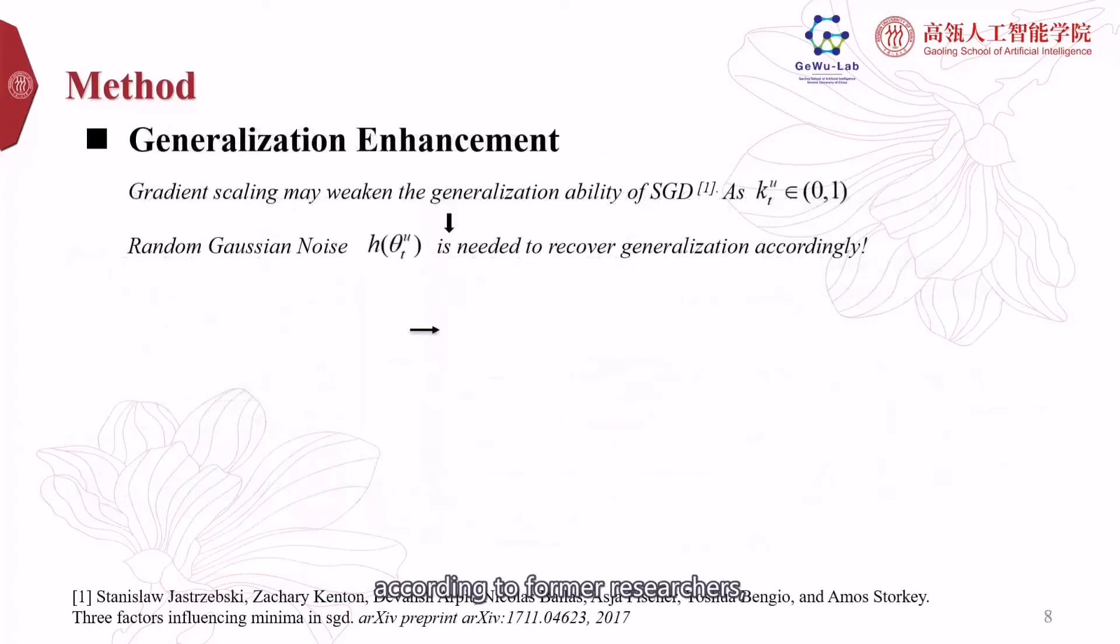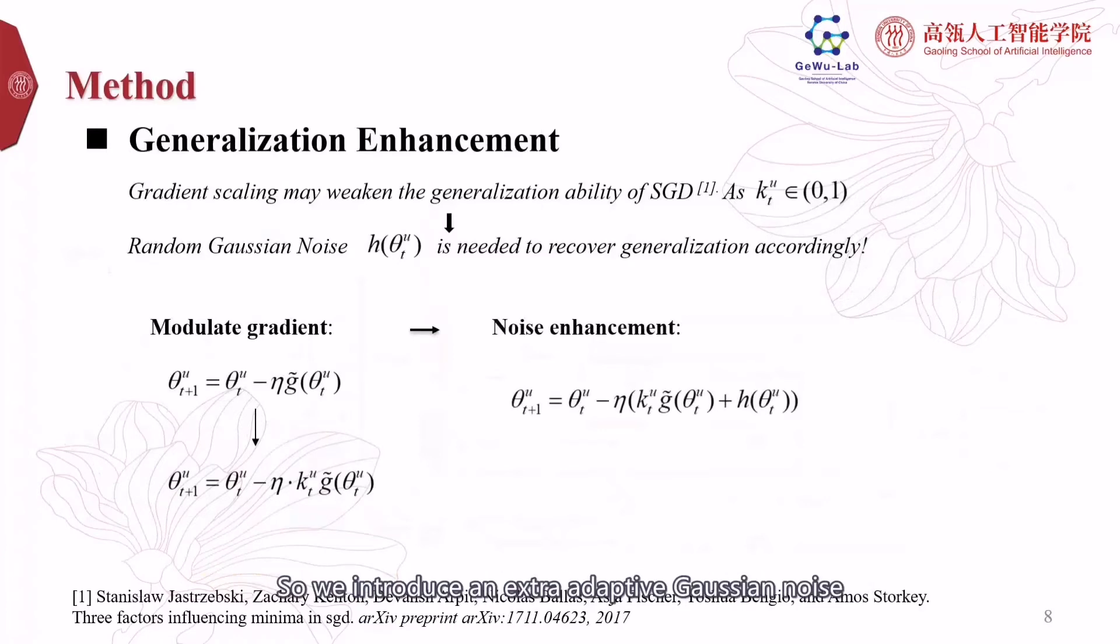However, according to former researchers, better generalization ability is closely related to bigger SGD gradient noise strength. While our method maybe undermines the gradient noise strength in the first step, so we introduce an extra adaptive Gaussian noise in the backward gradient to enhance the generalization of the model.